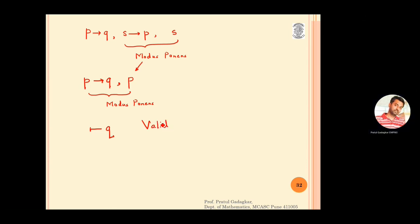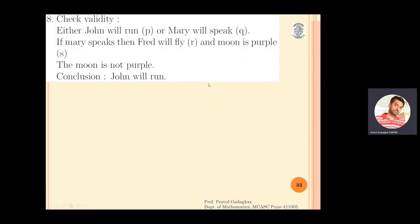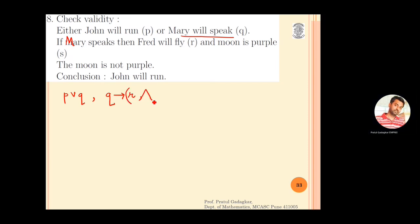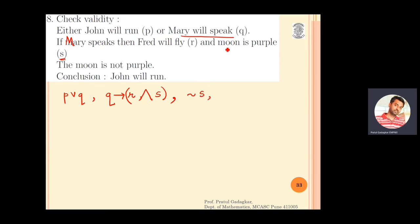For the next problem, let p represent 'John will run' and q represent 'Mary will speak.' The first premise is p or q. Let r represent 'Fred will fly,' so the second premise is q implies r and s, where s represents 'the moon is purple.' The third premise is negation s — the moon is not purple. The conclusion is p — John will run.